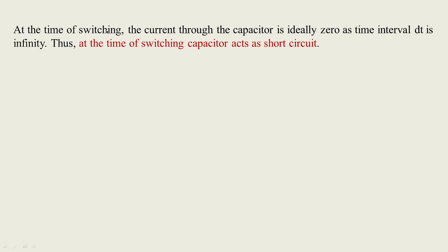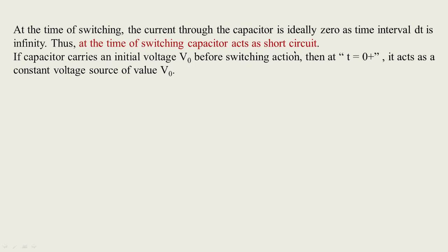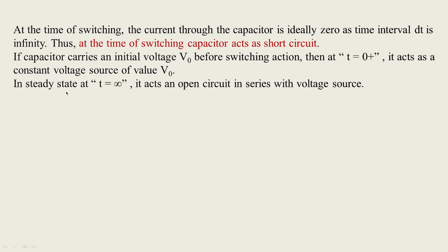At the time of switching, the current through the capacitor is ideally 0 as the time interval dt is infinity. Thus at the time of switching, the capacitor acts as a short circuit — unlike the inductor. If the capacitor carries an initial voltage v₀ before switching, then at t = 0+ it acts as a constant voltage source of value v₀. In steady state at t = ∞ it acts as an open circuit in series with a voltage source.